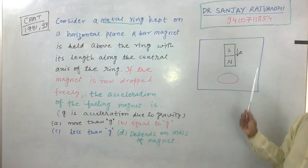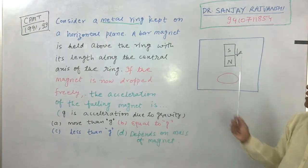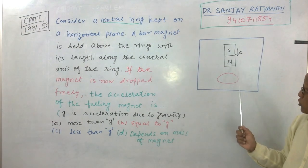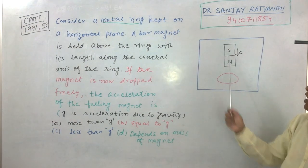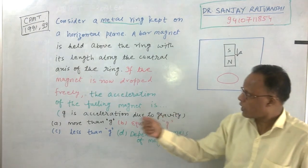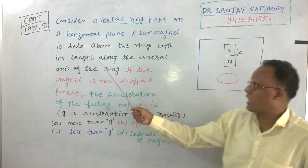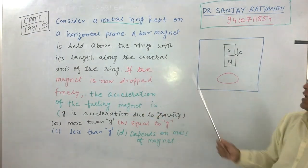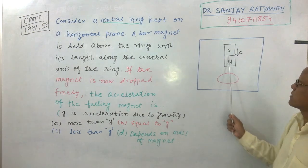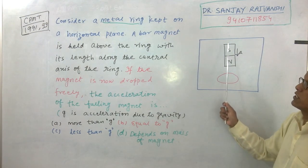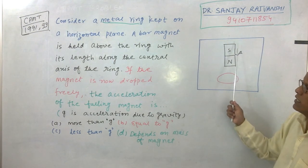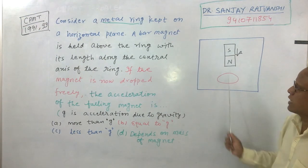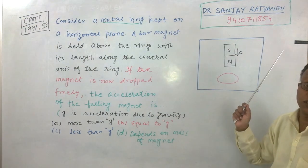The bar magnet is held above the ring with the north pole towards the ring and the south pole above, with its length along the central axis of the ring.